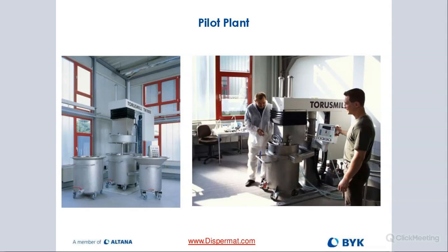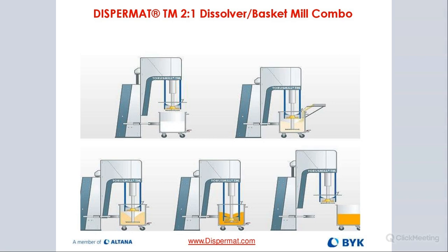We have a pilot plant in Germany where we can do small pilot trials with our dissolver as well as basket mill and horizontal mill. We also have a machine called the Dispermat TM — a patented system, two in one. For applications where you don't need to change the color much and want everything integrated, the Dispermat TM is basically a dissolver with an integrated basket mill all in one.